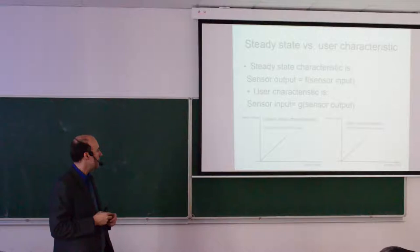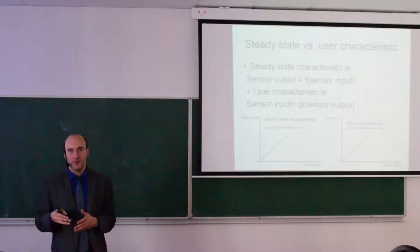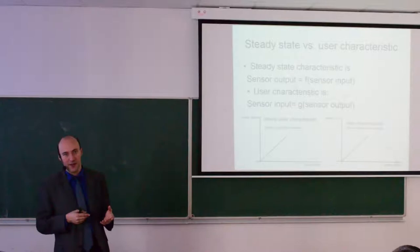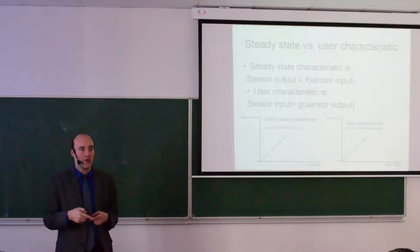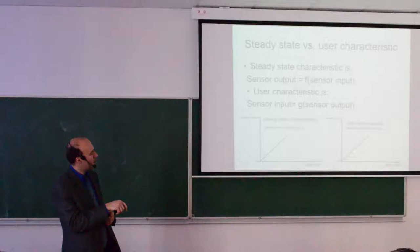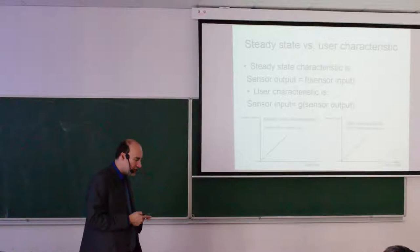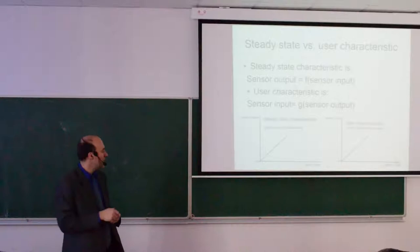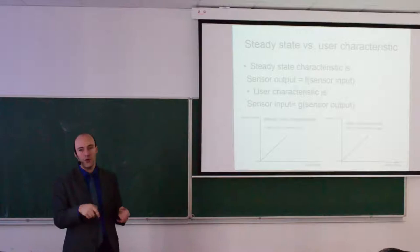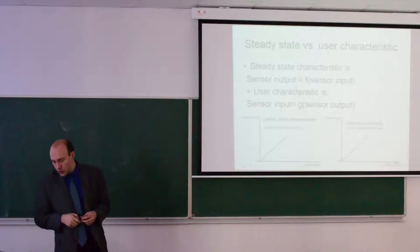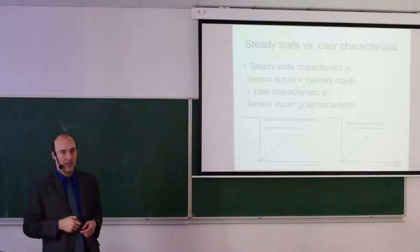The steady state characteristic has sensor input on the x-axis and sensor output on the y-axis. The user characteristic has sensor output on the x-axis and sensor input on the y-axis. You can create one from the other. The reason we use both depends on how we look at the sensor signal. If you are a user measuring temperature in a process, you read the sensor output — a voltage or resistance — and look in the table to find that, say, 5 millivolts corresponds to 100 degrees Celsius. That is the user characteristic. In data sheets, however, you will typically find the steady state characteristic. We will work with both, but most often with the steady state characteristic.